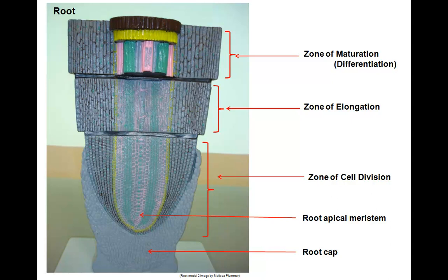This is a view of the longitudinal section of the root. The root tip is made up of three zones of growth. Starting at the tip, we find the root apical meristem giving rise to primary growth. This area is very tender, so a protective root cap surrounds it much like a sewing thimble protects one's thumb. This area is known as the zone of cell division. Cells laid down earlier are in the zone of elongation, where cells lengthen and push the root tip further down into the soil.